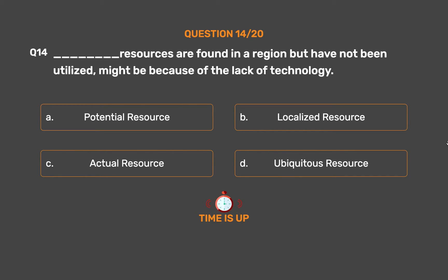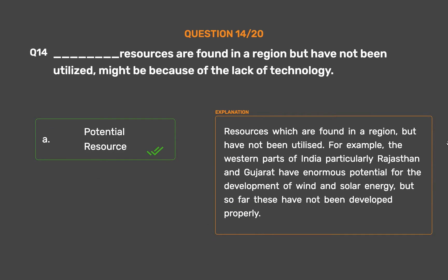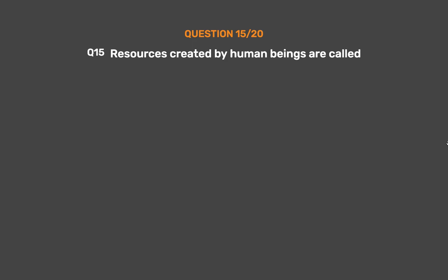The correct answer is Option A: Potential resource. Resources which are found in a region but have not been utilized — for example, the western parts of India, particularly Rajasthan and Gujarat, have enormous potential for the development of wind and solar energy, but so far these have not been developed properly.